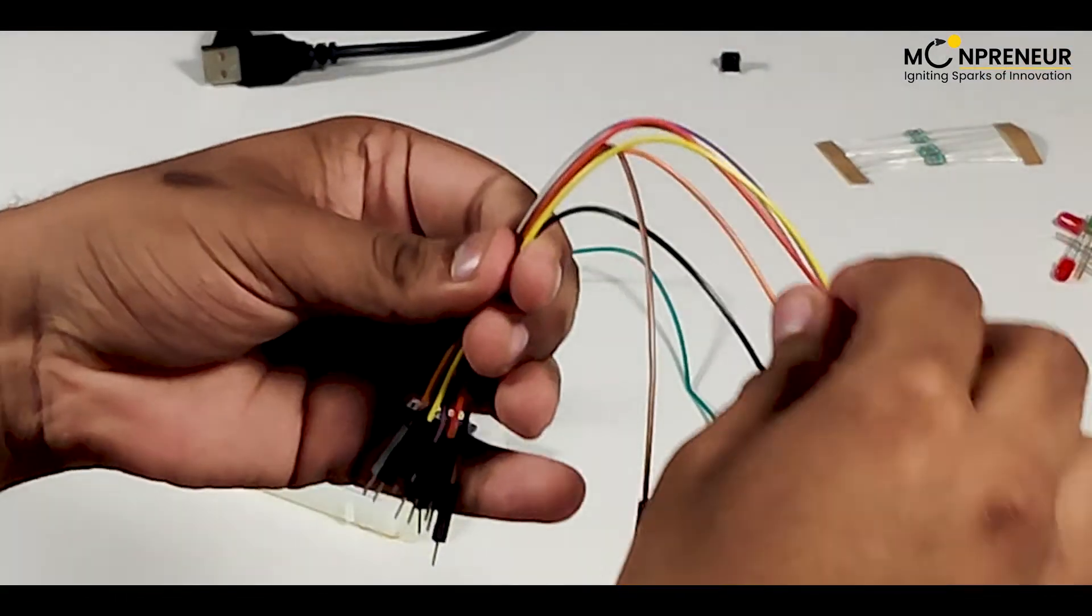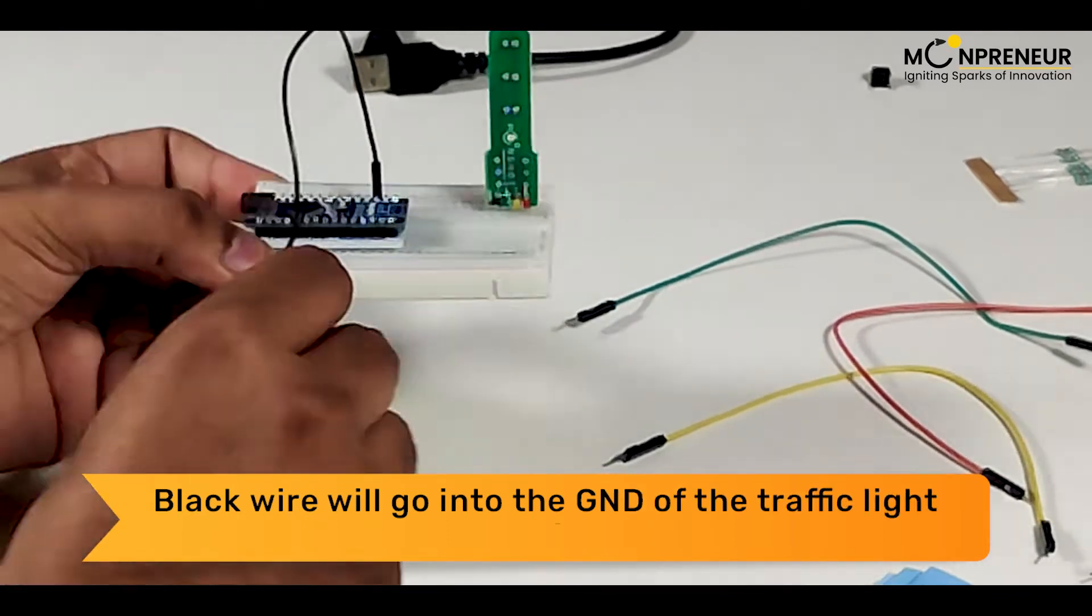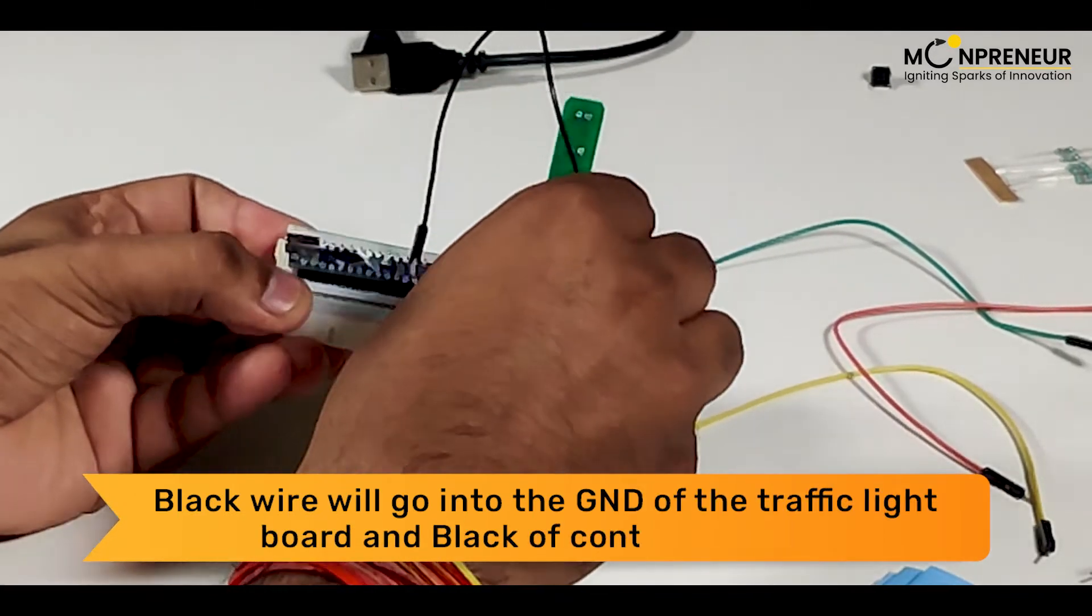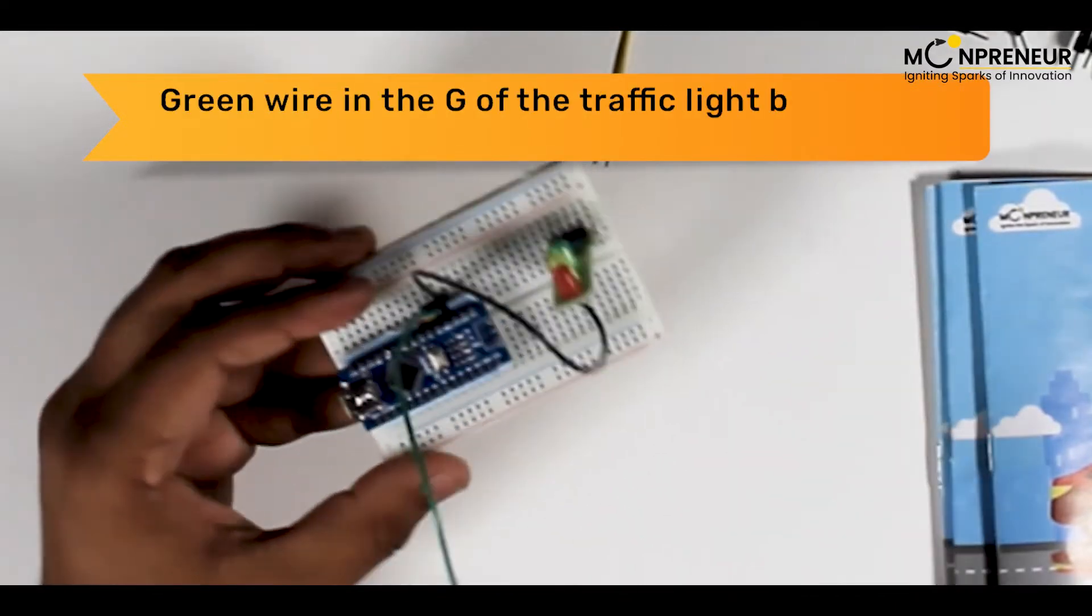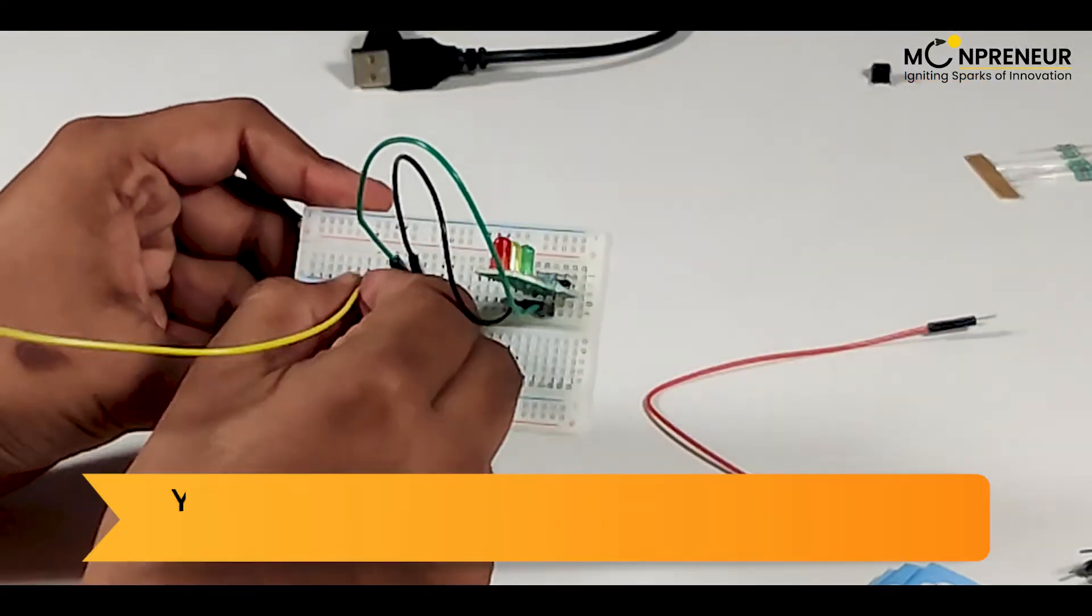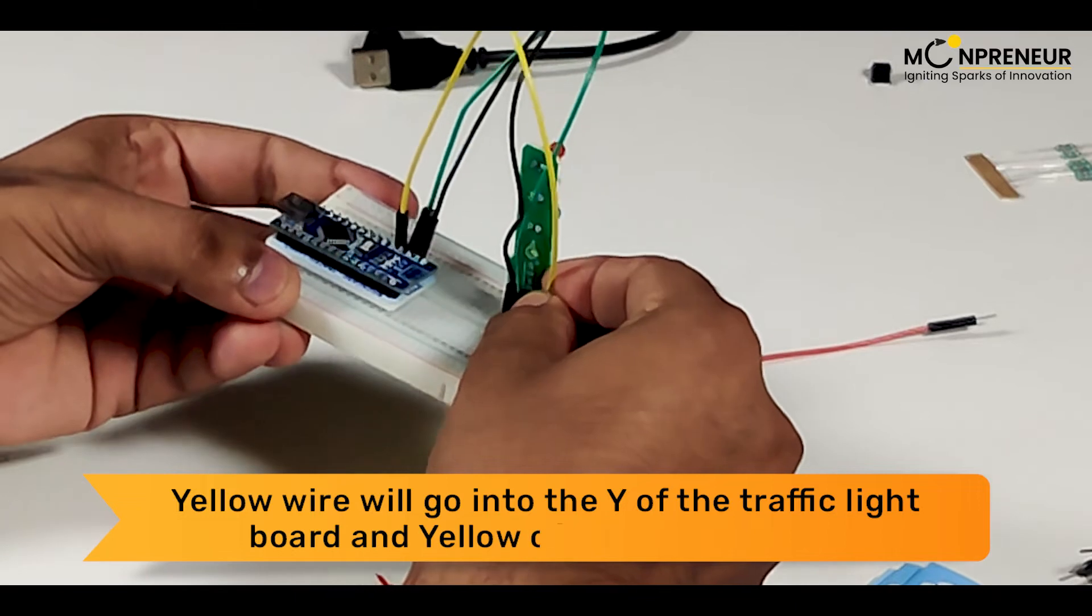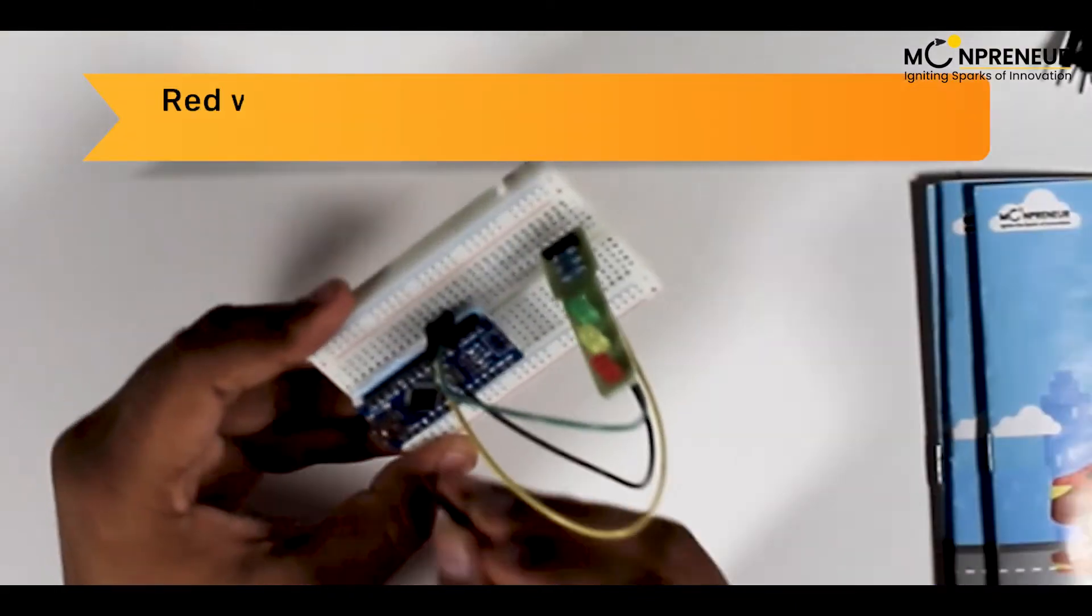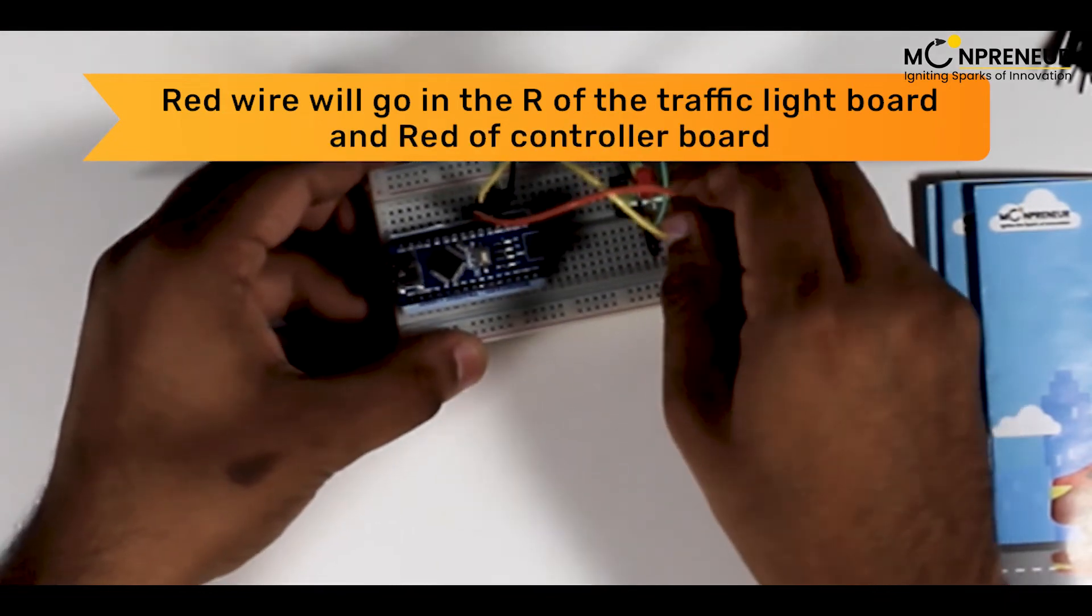Here comes the connections. Black wire will go into the GND of the traffic light board and black of the controller board. The green wire in the G of the traffic light board and the green of the controller board. Similarly, the yellow wire will go into the Y of the traffic light board and the yellow of the controller board. The red wire will go into the R of the traffic light board and red of the controller board.